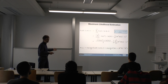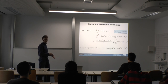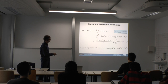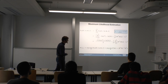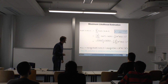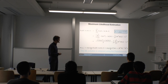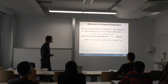We already know the solution: the W that maximizes the likelihood is obtained using the pseudo-inverse — phi^+ times T. So the maximum likelihood solution is exactly what we derived before. Maximizing the likelihood is the same as minimizing the squared error, which is solved using the pseudo-inverse.